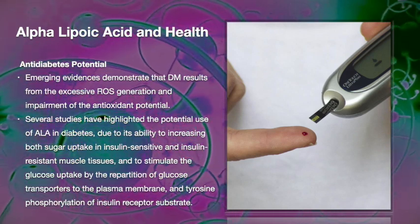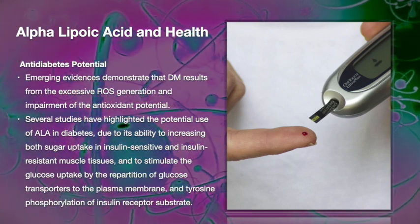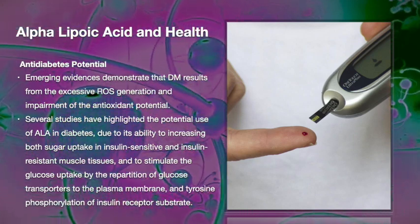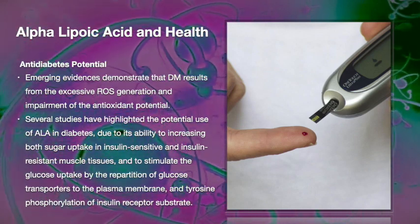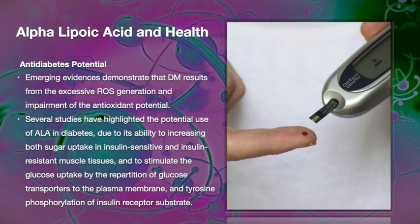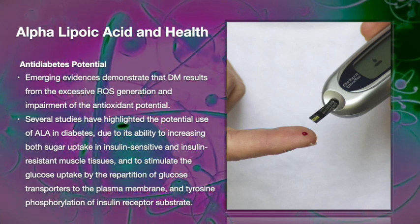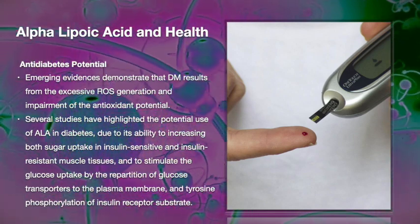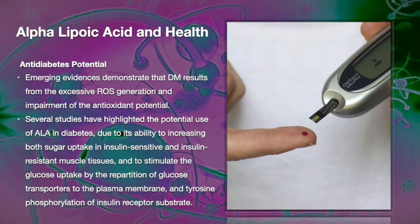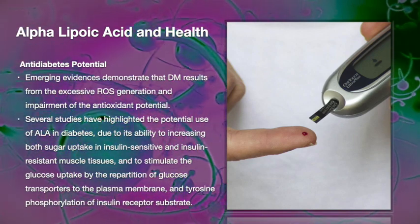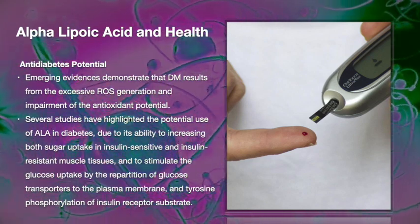Diabetes is a challenge caused by insulin resistance, manifested as increased sugar levels in blood. There is also an excessive amount of ROS or reactive oxygen species generated, with impairment of antioxidant potential in cells. Several studies have highlighted the potential use of ALA in diabetes because of its ability to increase sugar uptake in both insulin sensitive and insulin resistant muscle tissue, and to stimulate glucose uptake in cells.